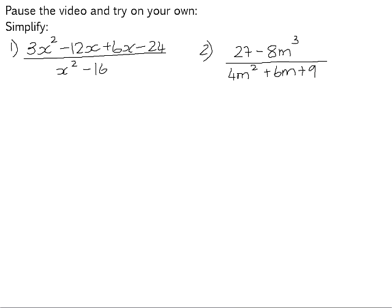Please pause the video and try these examples on your own. Number 1, we have four terms in the numerator so we need to group. If we group the 3x squared and the 12x, we have 3x that is common and that leaves us with x minus 4.